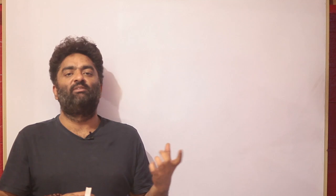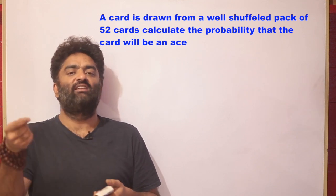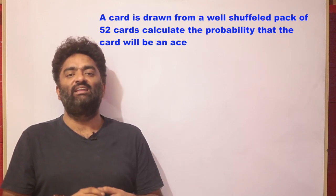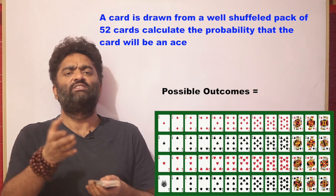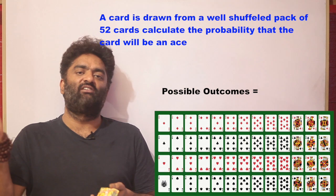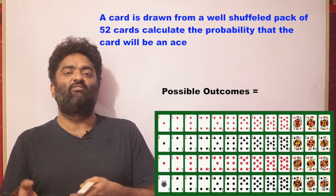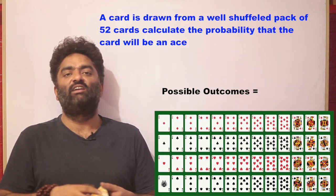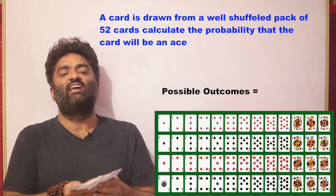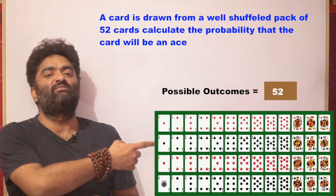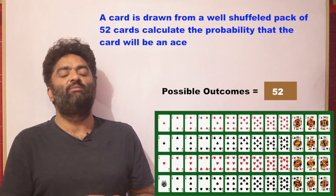Let's try one more standard example. You are asked to draw one card out of a deck of cards. What is the probability that it is going to be an ace? Start with your formula — in the denominator you want all possible outcomes. In a deck of cards there are 52 cards, so drawing one card can be done in 52 different ways, giving 52 possible outcomes in the denominator.